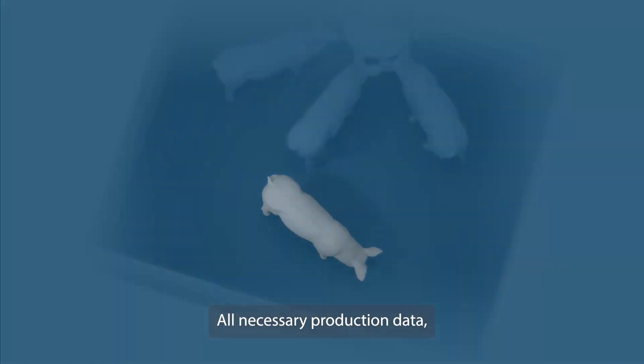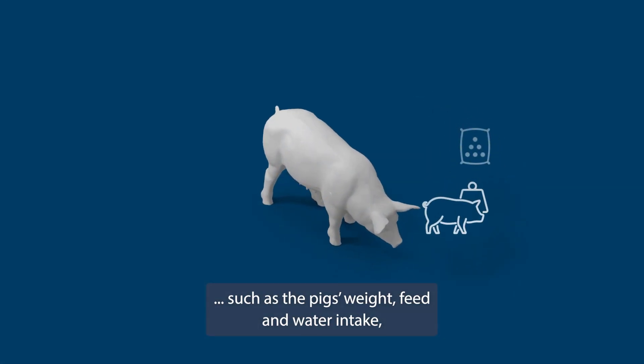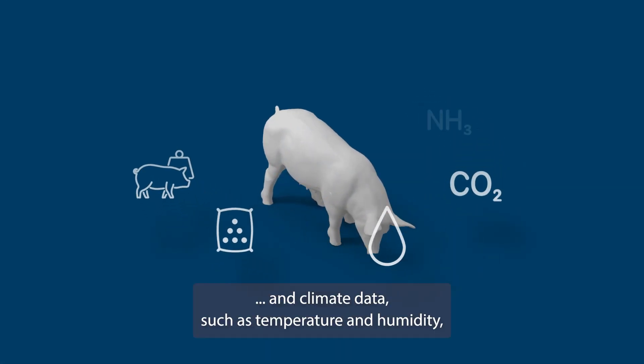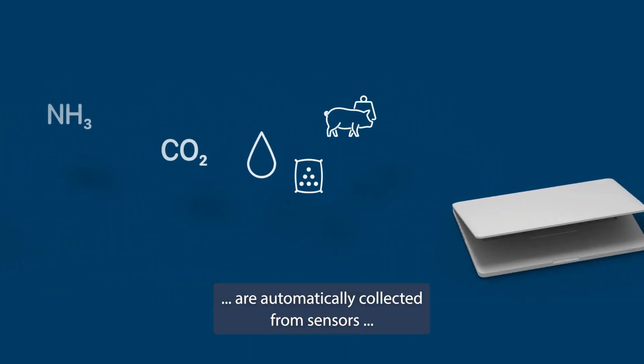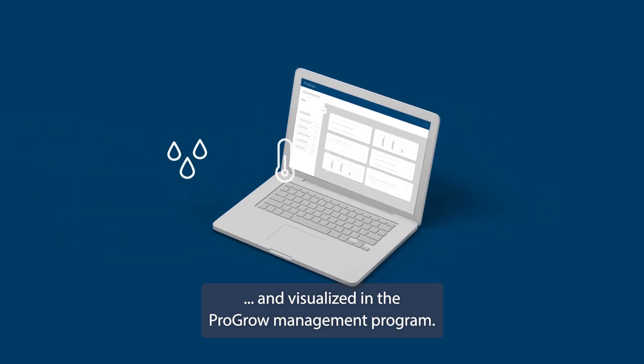All necessary production data, such as the pig's weight, feed and water intake, and climate data, such as temperature and humidity, are automatically collected from sensors and visualized in the ProGrow management program.